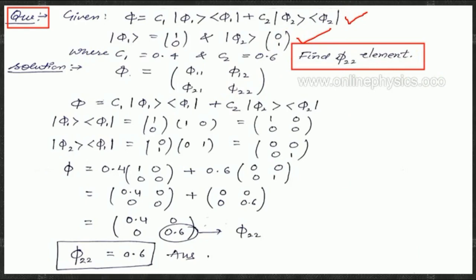In matrix form, phi can be written as a 2×2 matrix with elements phi11, phi12, phi21, and phi22. Here phi equals c1 times the ket-bra product of phi1, plus c2 times the ket-bra product of phi2. We have the values of c1 and c2, so we just need to find the ket-bra products of phi1 and phi2.